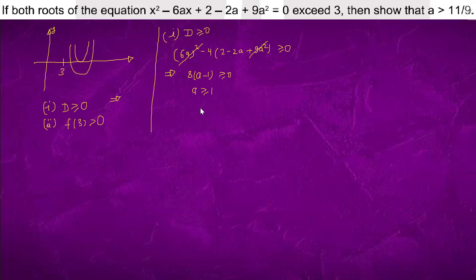For condition 2, f(3) > 0. Substituting x = 3: 9 - 18a + 2 - 2a + 9a² > 0, which simplifies to 9a² - 20a + 11 > 0.